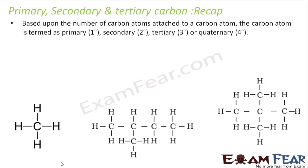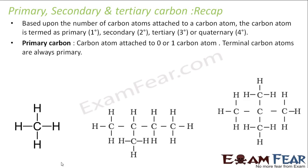Based on the number of carbon atoms attached to a carbon atom, the carbon is termed as primary, secondary, or tertiary. Primary is one which has 0 or 1 carbon attached. For example, this carbon here has 0 carbons attached, so it is primary. Mark primary in green. This next carbon has 1 carbon attached, so 0 or 1 is primary — this one is also primary.